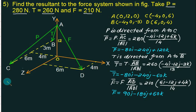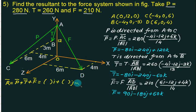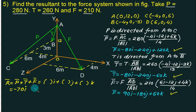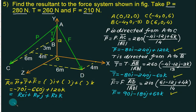For a concurrent force system, the resultant R-bar equals the vector sum of all forces: P-bar plus T-bar plus F-bar. Collecting all coefficients of i, j, and k from the three forces gives R-bar = −70i − 660j + 120k. Comparing with the standard vector, we get Rx = −70, Ry = −660, and Rz = 120.